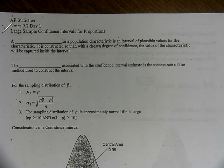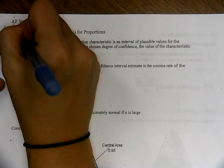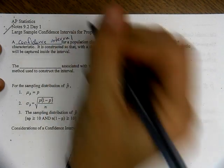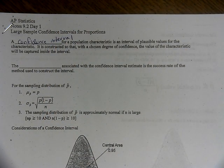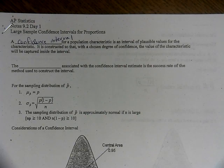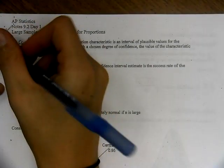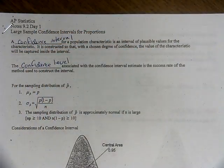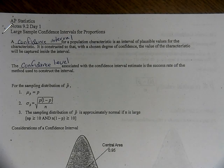A confidence interval is an interval estimate of what we're trying to find. If we're trying to find a true proportion, we usually give an interval estimate. A confidence interval for a population characteristic is an interval of plausible values for that characteristic, constructed so that with a chosen degree of confidence, the value will be captured inside that interval. The confidence level is the success rate of the method used to construct the interval.